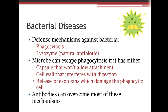The first category we'll look at is bacterial diseases. Bacteria must overcome phagocytosis from neutrophils and lysozyme found in tears and saliva. Microbes can escape phagocytosis if they have a capsule that prevents attachment, a cell wall that interferes with digestion, or if they release an exotoxin toxic to the phagocytic cell. Sometimes antibodies can overcome those mechanisms as well.